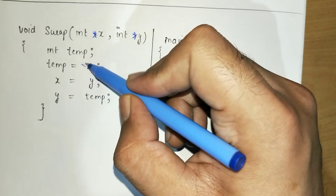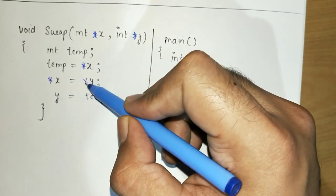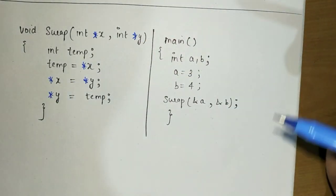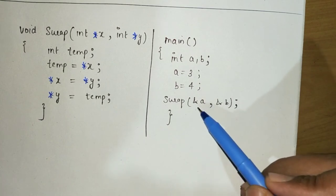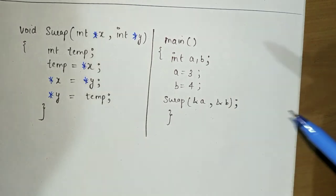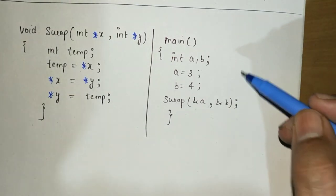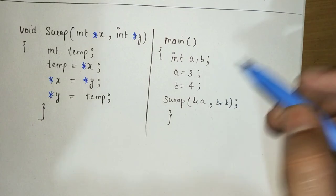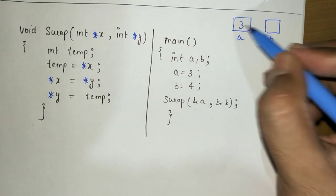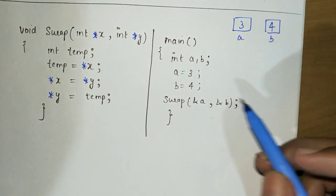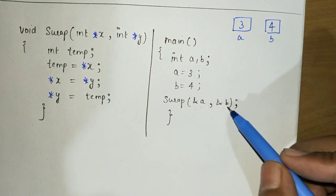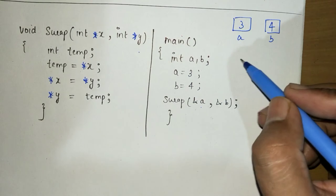I also need to update the corresponding lines inside the function. The other key difference is that I'm now passing the address of a and b instead of the values of a and b. So the addresses of a and b are copied into x and y, meaning x and y are two pointers which hold the addresses of a and b.